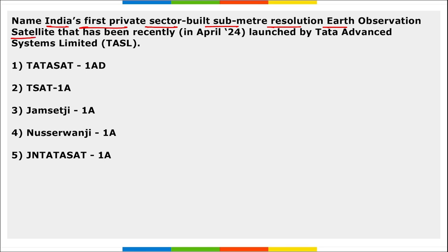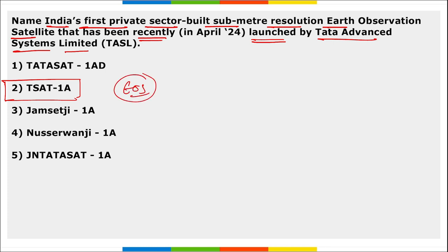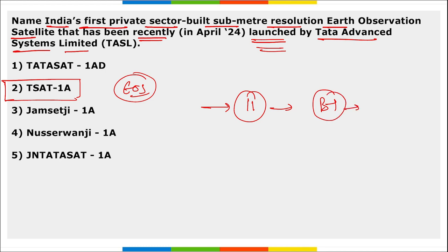Next: name India's first private-sector-built sub-meter resolution Earth observation satellite recently launched by Tata Advanced Systems Limited. It is TSAT-1A. This is India's first private-sector-built sub-meter resolution Earth observation satellite launched by Tata Advanced Systems Limited. It was one of the 11 satellites that was part of Bandwagon One, launched by SpaceX using their Falcon 9 rocket.